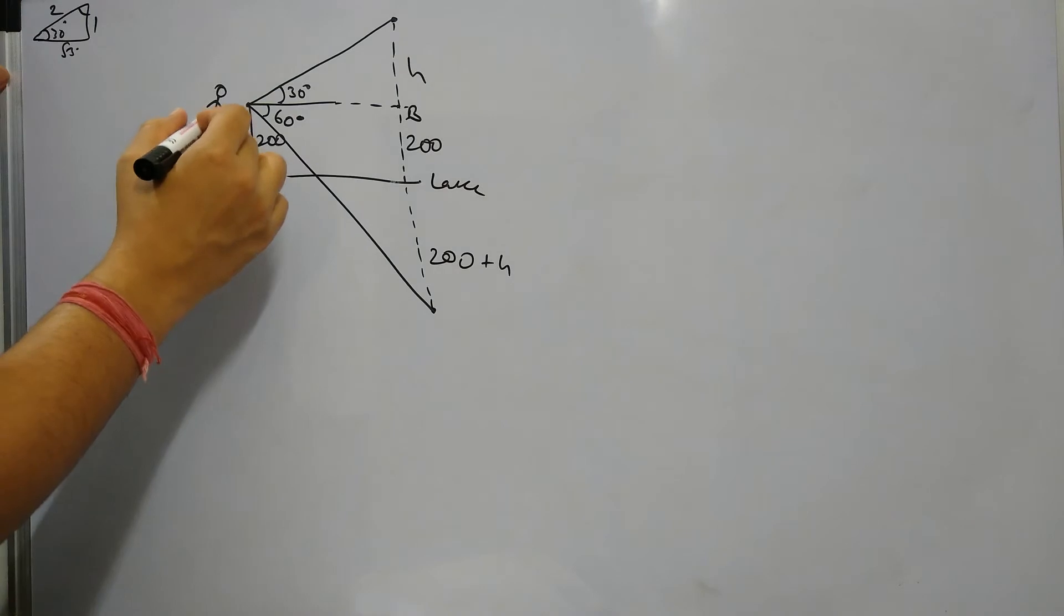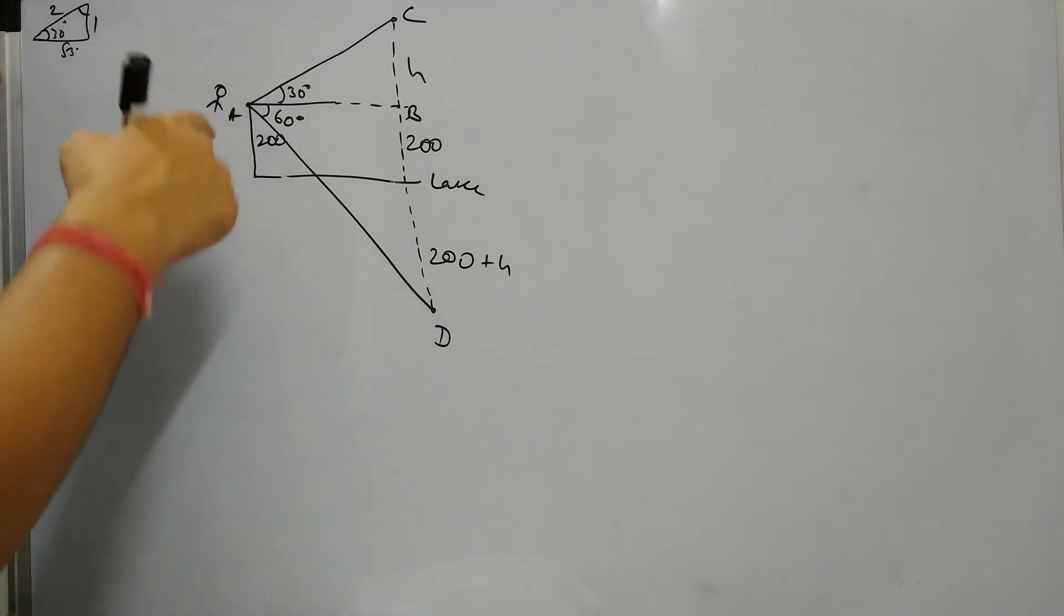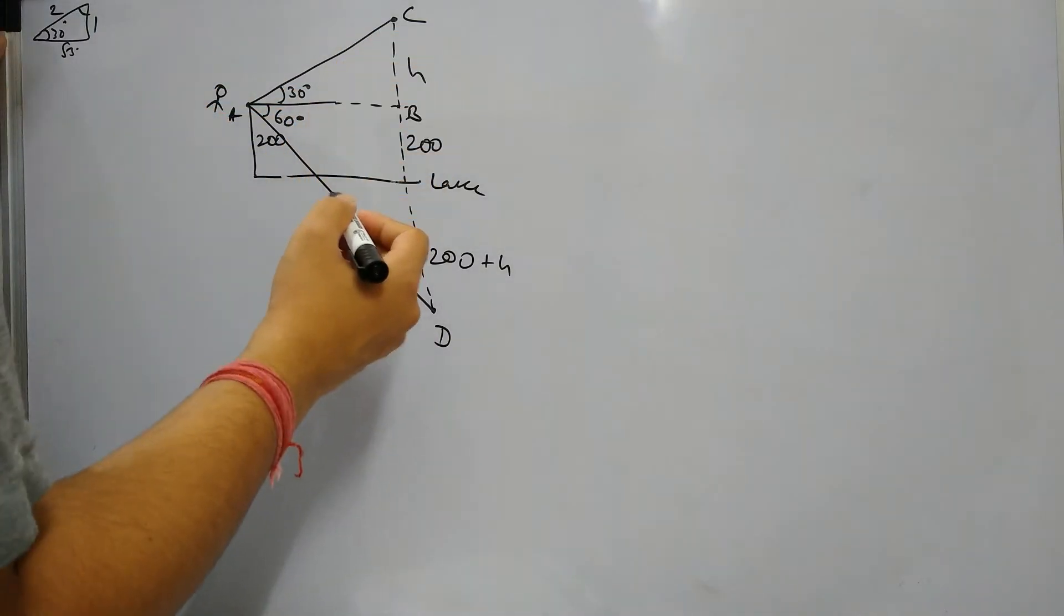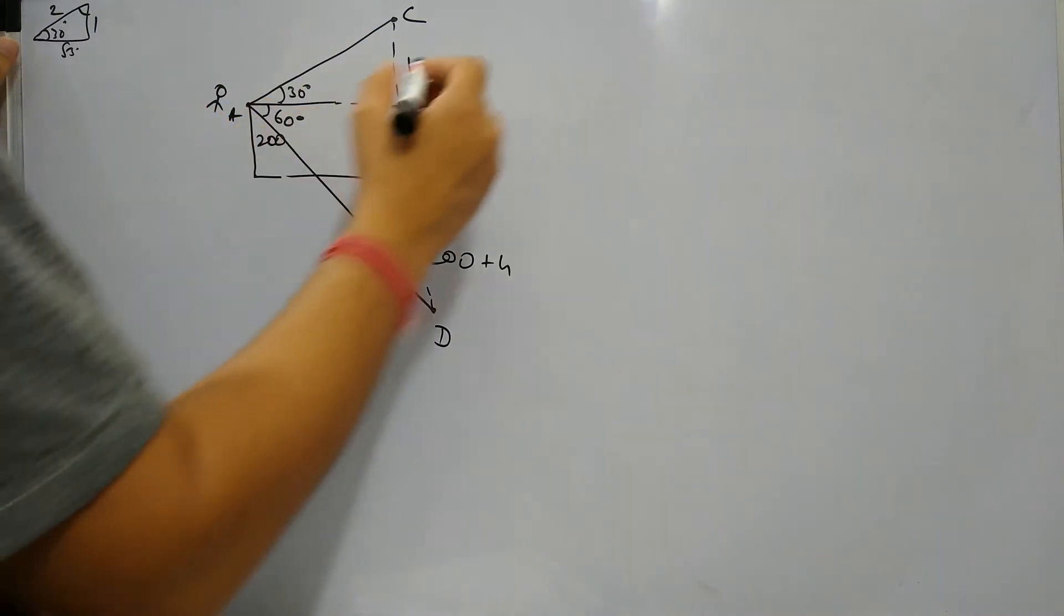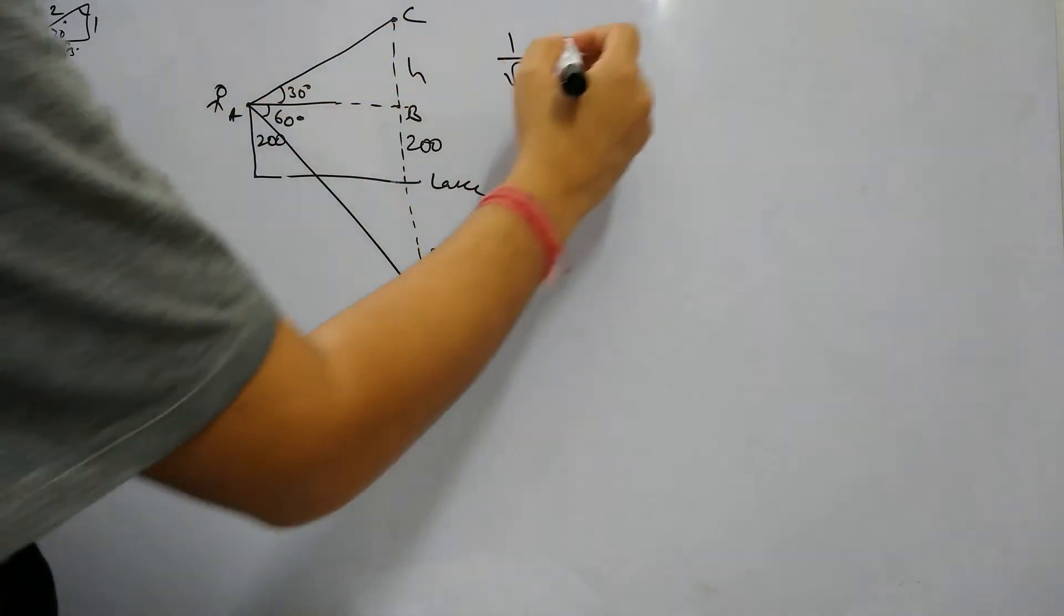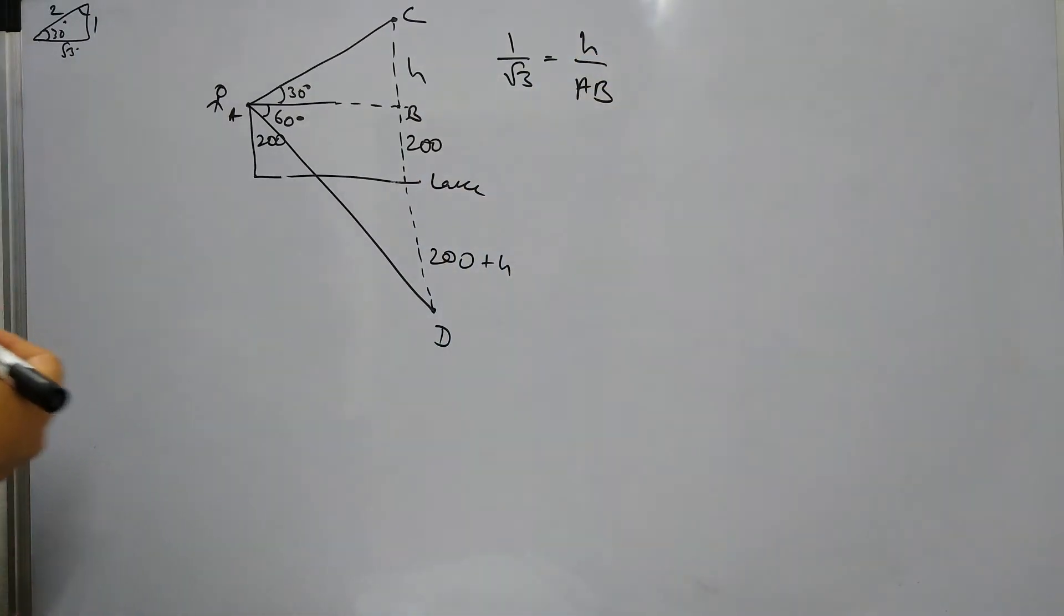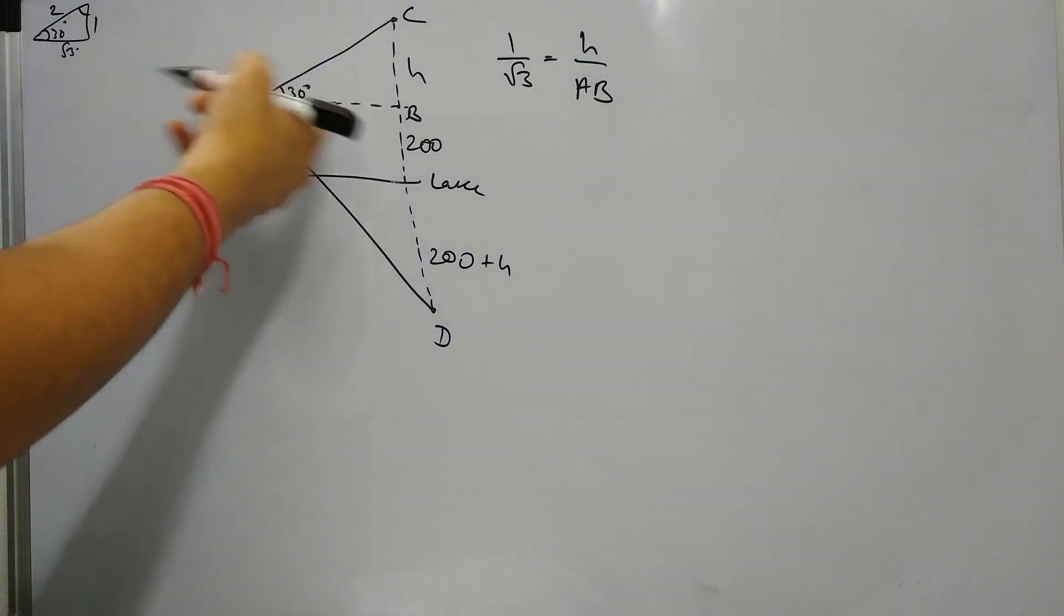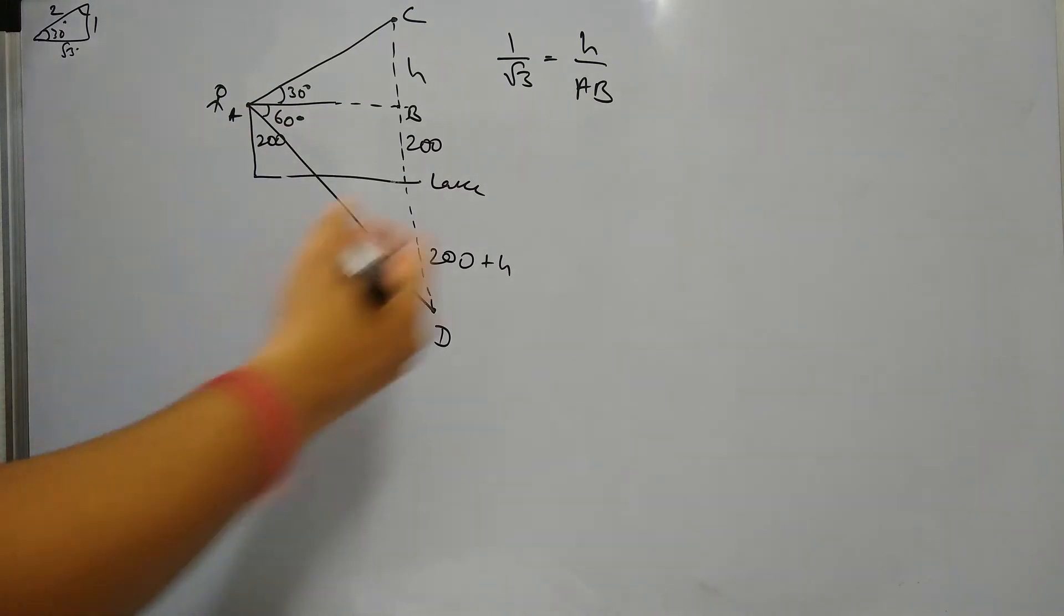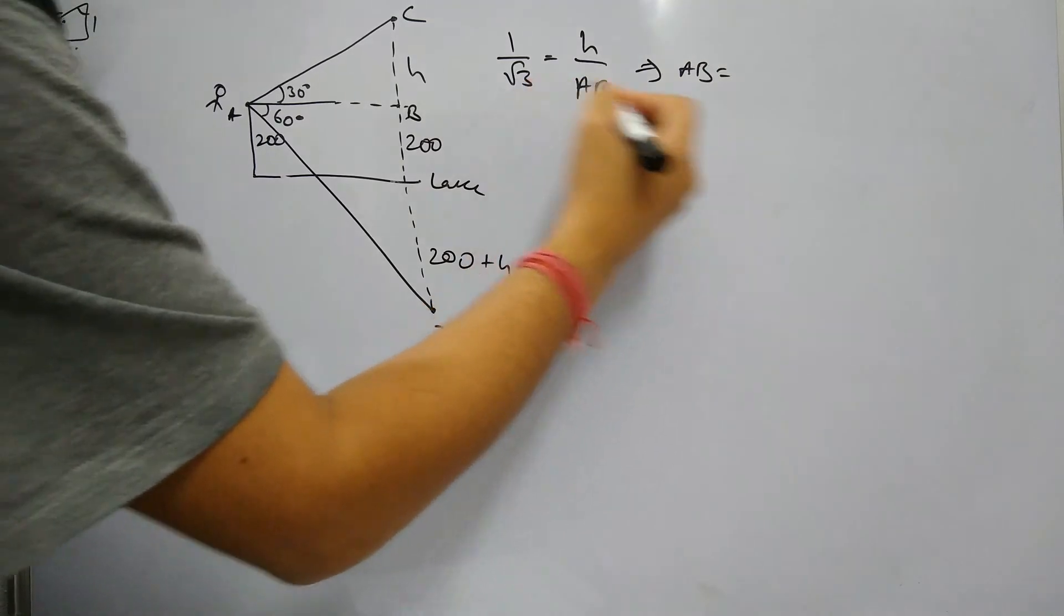So in two triangles, let's say this cloud is at C and the shadow is at D. In triangle ABC, if we take tan 30, tan 30 is 1 by root 3, then we get h by AB. And in both triangles, since AB is common, we can eliminate it from both places.